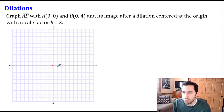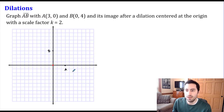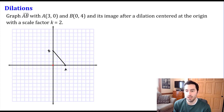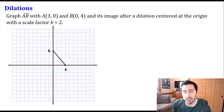Let me plot these two points. A is at (3, 0), so it goes right here, and B is at (0, 4), which is up here on the y-axis. Here's B — let me connect those together so we can take a look at our segment AB. We are going to dilate this and it's going to move a little bit away from our center of dilation, which is at the origin.